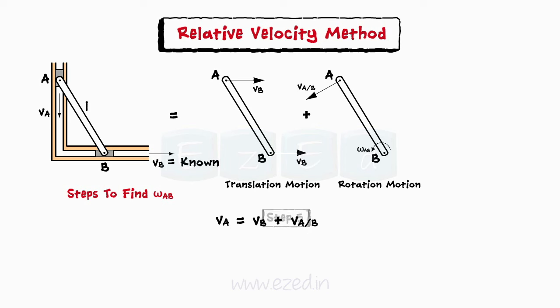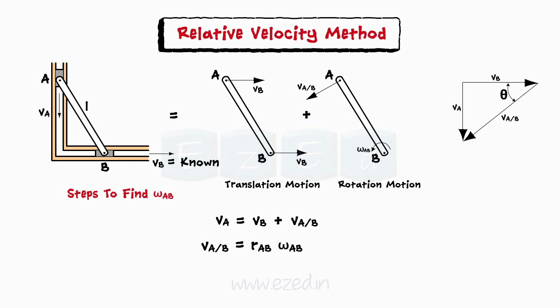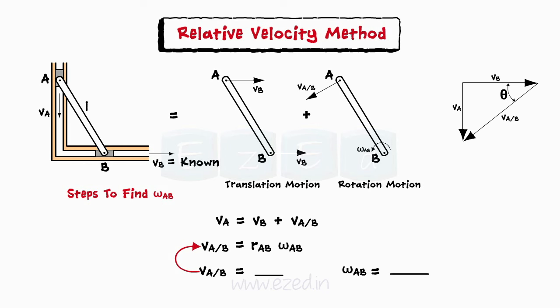Step 5: Write the relation for the absolute velocity of the translating point and simultaneously draw the vector diagram. From the relation, VAB can be found out. When we substitute the value of VAB in the relation for relative linear velocity, we get the angular velocity omega.